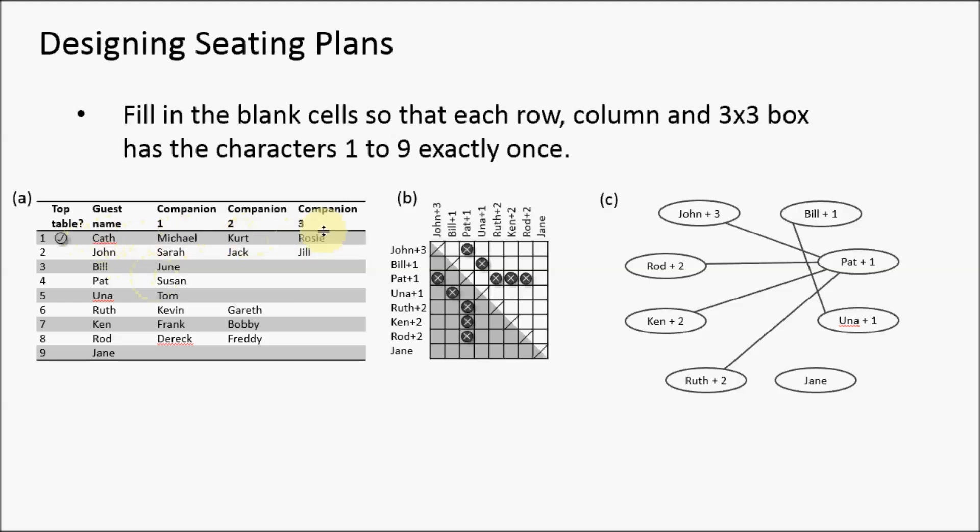Kath, Michael, Kurt, and Rosie are a family; Pat and Susan are a couple, and so on, so they should be sat together. However, let's also imagine that some of these guest groups don't get on with one another.